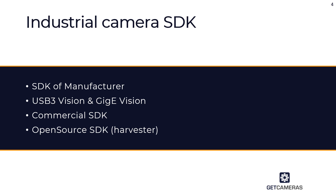Let's discuss the industrial camera SDK. SDK stands for software development kit. Each manufacturer provides a software development kit with their camera. However, this SDK will only work with the cameras of that specific manufacturer, so you cannot switch between different camera brands when you have implemented their SDK. That is called a vendor lock.